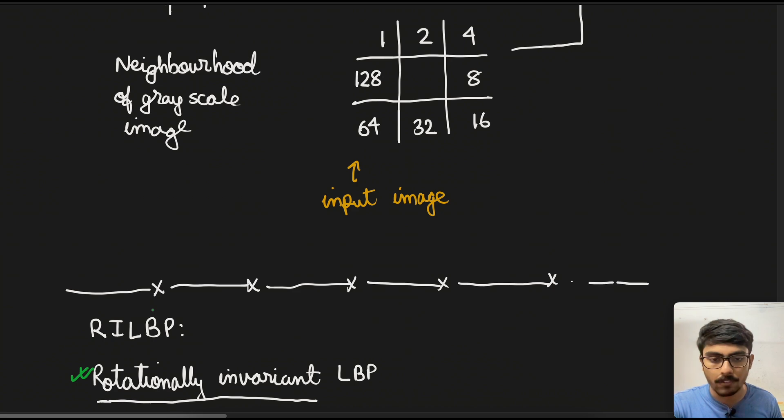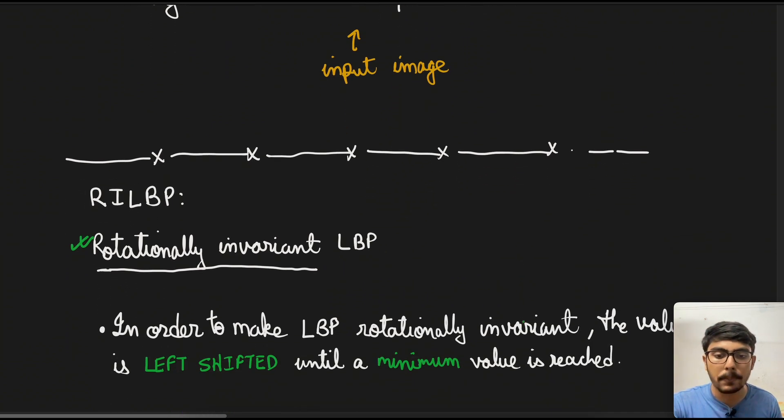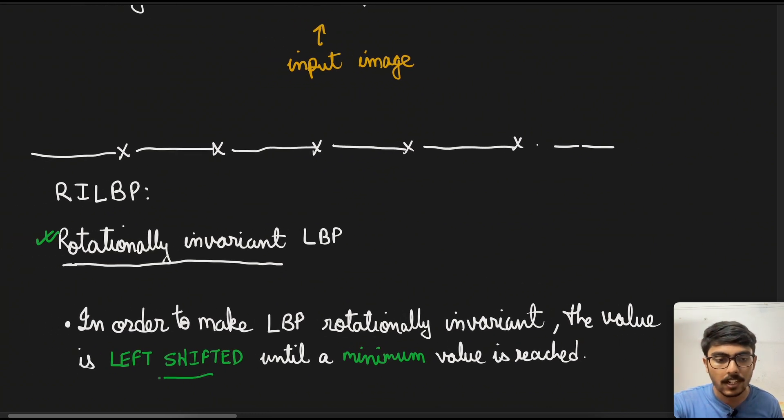Whatever be the rotation angle of the image, if the image is same, the descriptor will give the same value. That is why we have this rotationally invariant LBP. When people do texture analysis, they heavily depend on RILBP rather than LBP itself, because LBP might change or the histogram representations change when we change the rotation angle of an image.